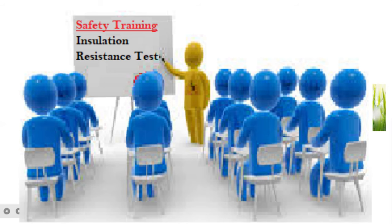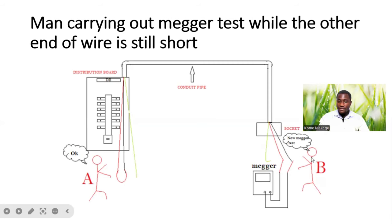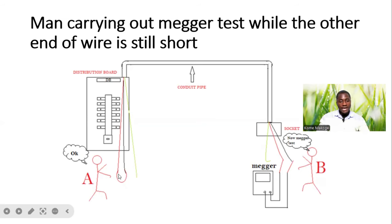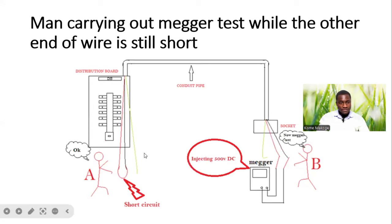As I said, trained personnel should carry out this test. If he is to carry out the test, he needs to properly inform the other person that they are beginning with the mega test or insulation resistance test. The person at the DB side needs to know to remove the wire that was used to short both ends. Let's see what happens.